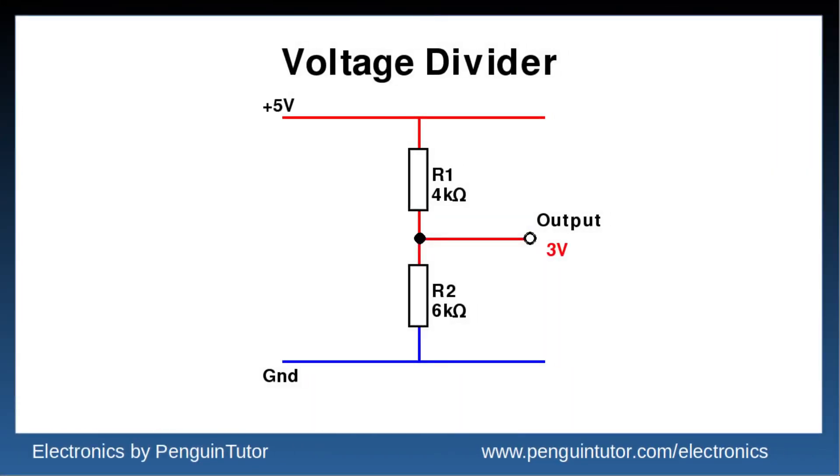If we reduce the value of the top resistor, R1, then the output voltage will increase. If we use a ratio of 3 to 2, the value of R2 being 6 kilo ohms and R1 being 4 kilo ohms, then the output will be 3 volts.